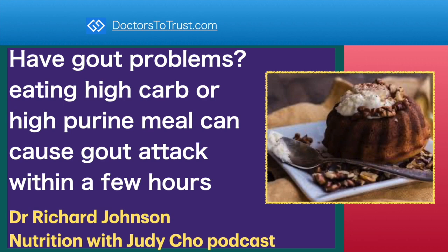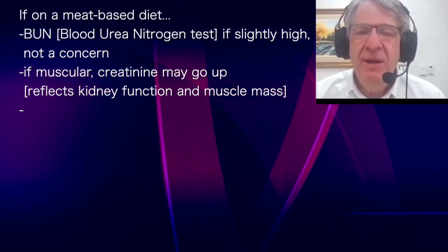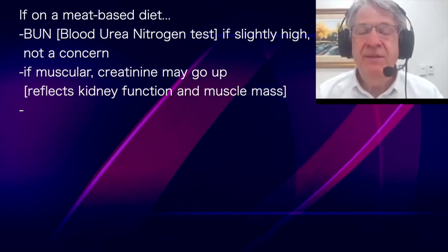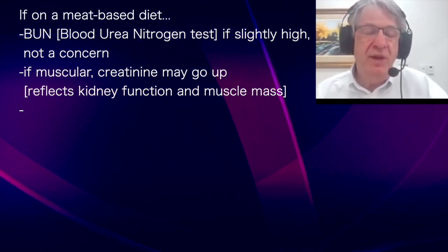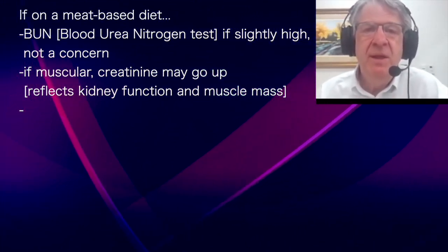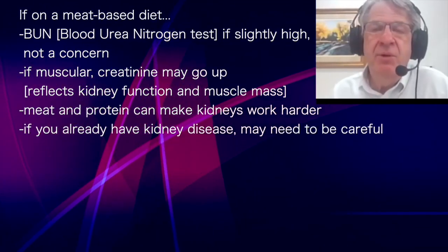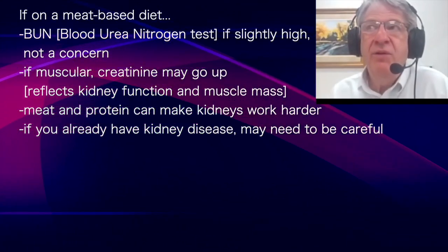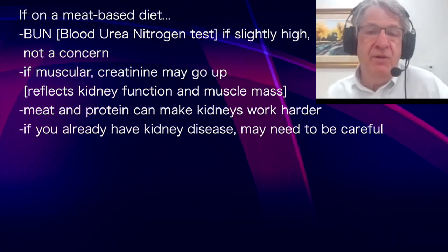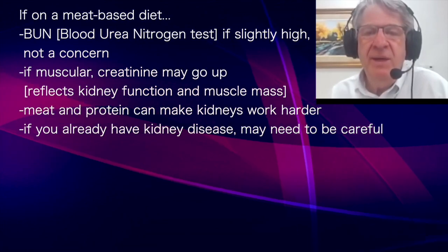When you're on a meat diet, BUN will be slightly high just from that, which is not a concern. If you're muscular, your creatinine may also go up because creatinine reflects not only kidney function but also muscle mass. Meat and protein can make the kidneys work harder, so over time — particularly if you already have kidney disease — you need to be a little careful about a high meat diet.